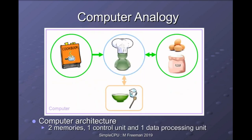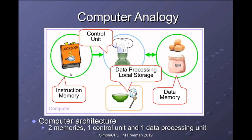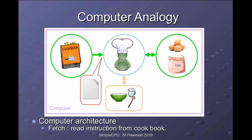Breaking those elements down into different units, following the same color scheme — blue is control, green is memory, and orange is data processing — you can consider your computer to be made up of these building blocks. You have instruction memory containing your program, data memory containing the elements you need to process, and a data processing element which also has some local storage, indicated by the bowl. Synchronizing all the movements and operations is our control unit, our chef.